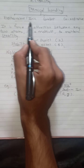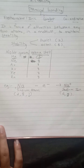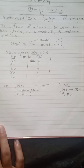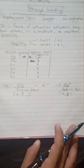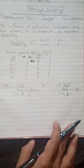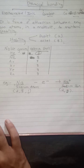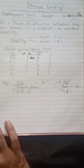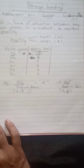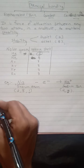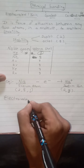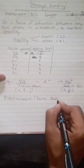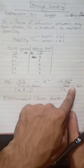We are going to study three different types of bonding: electrovalent, covalent, and coordinative bond. First we are going to start with the electrovalent bond. Electrovalent has one more name — the ionic bond — because it involves the formation of ions, which carry a charge.